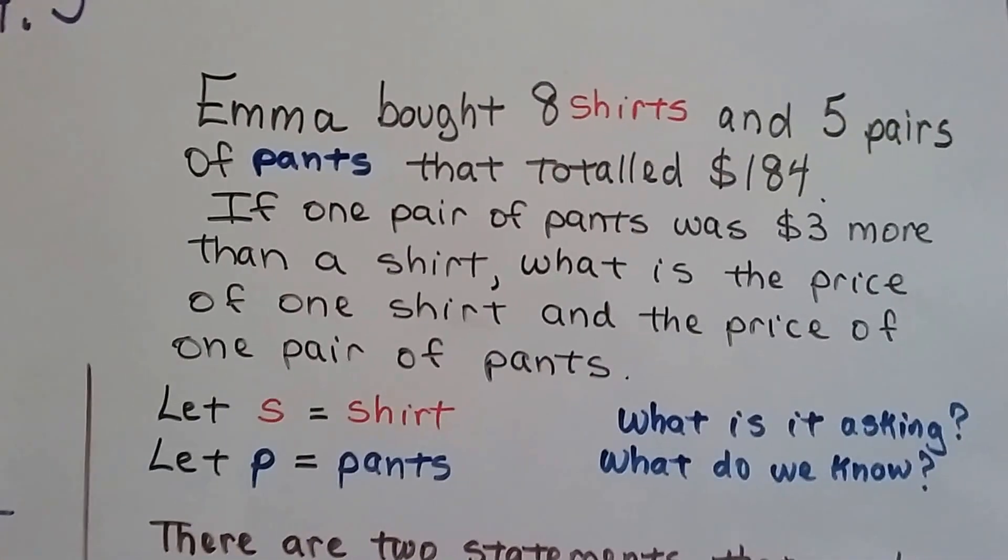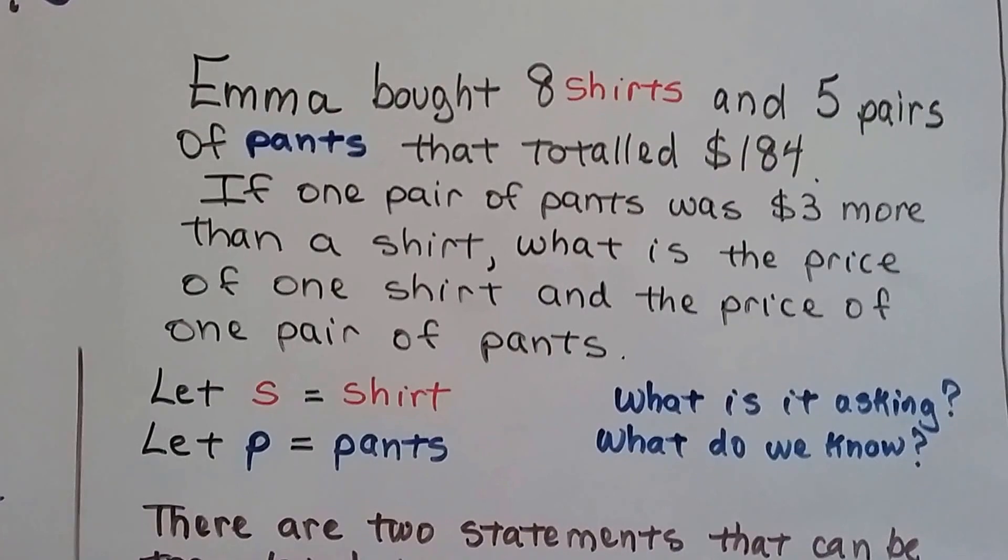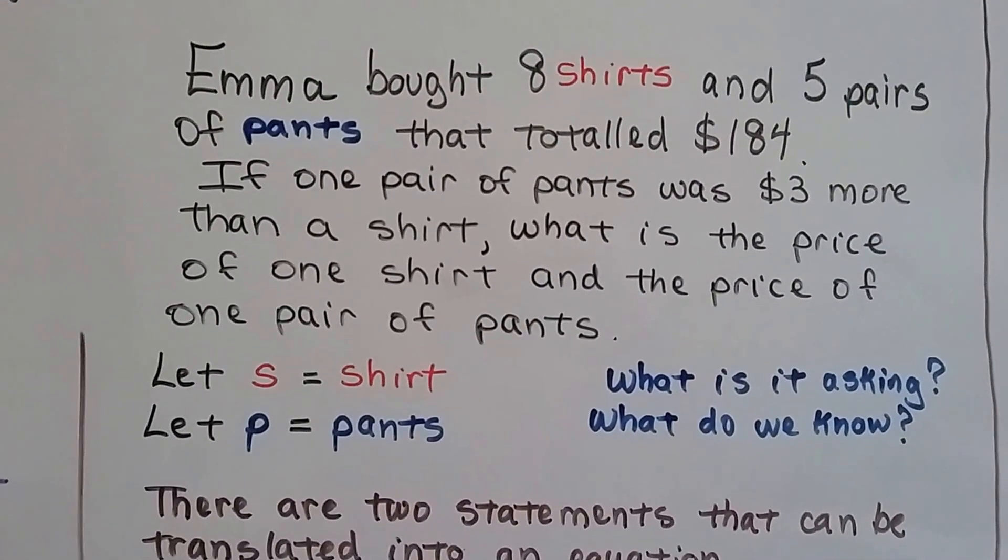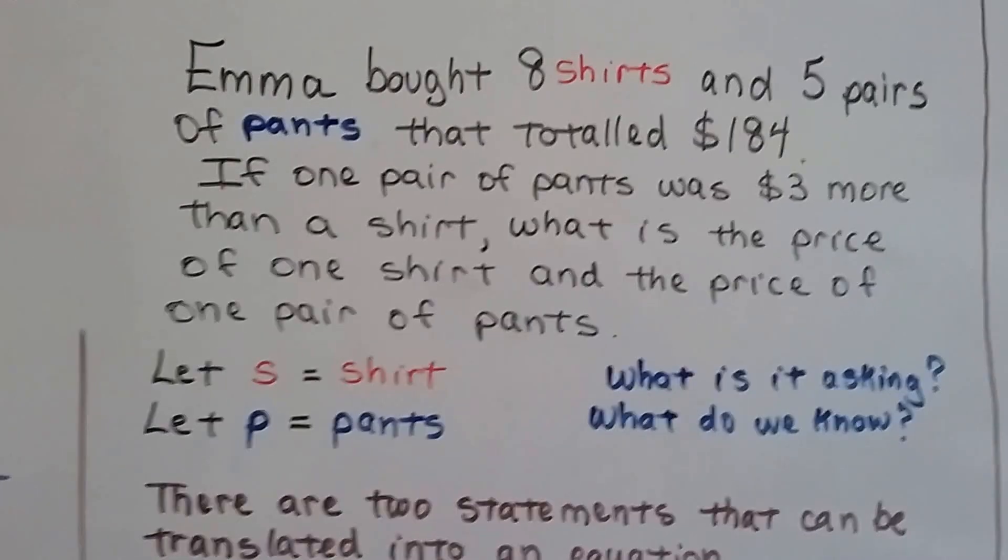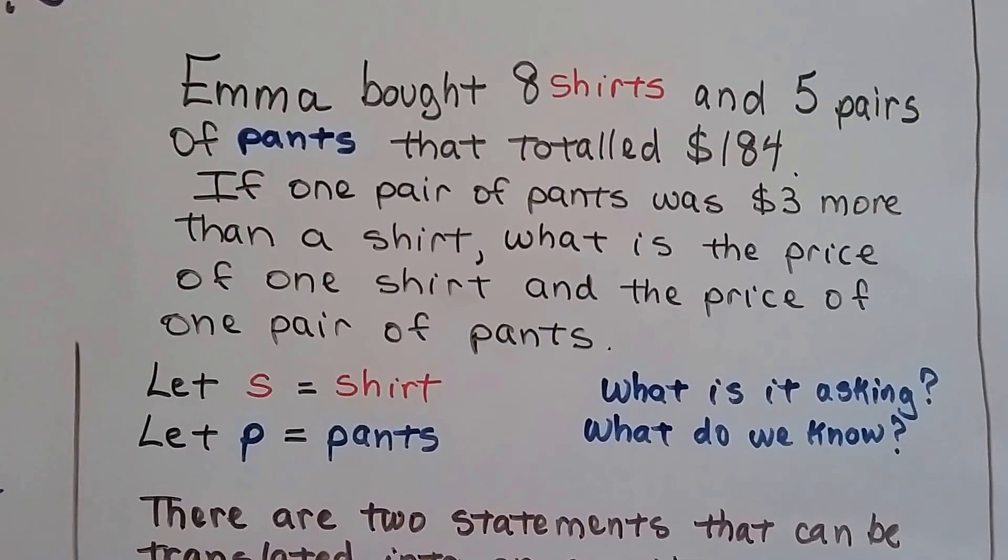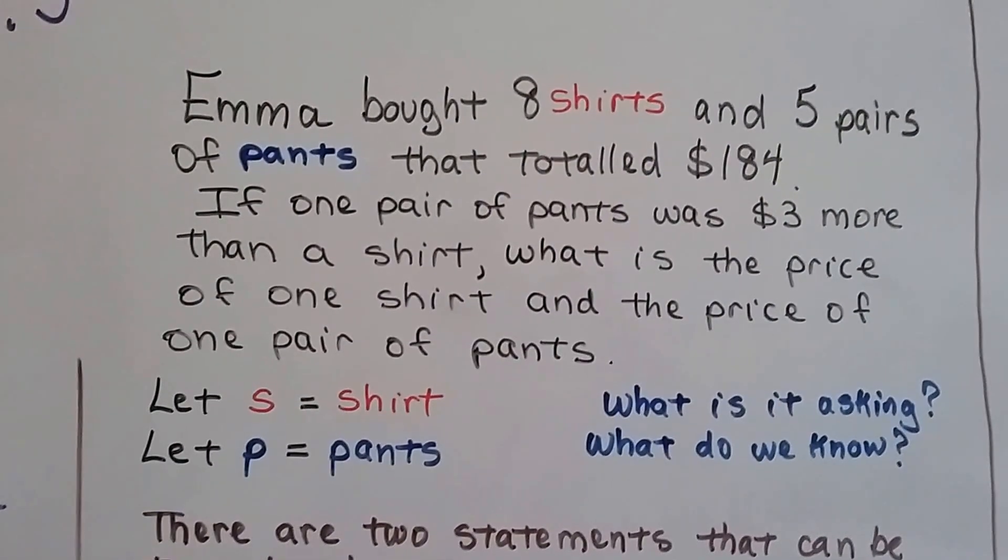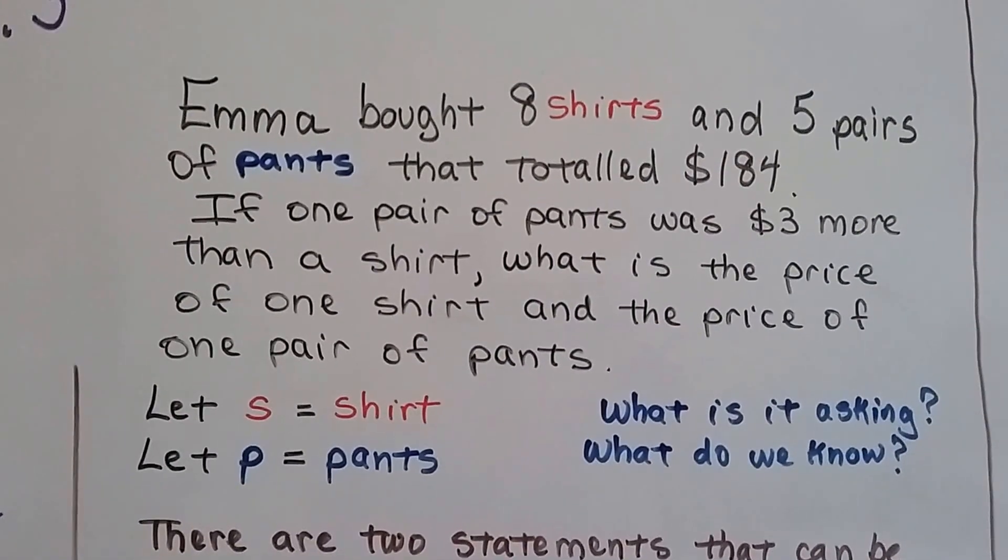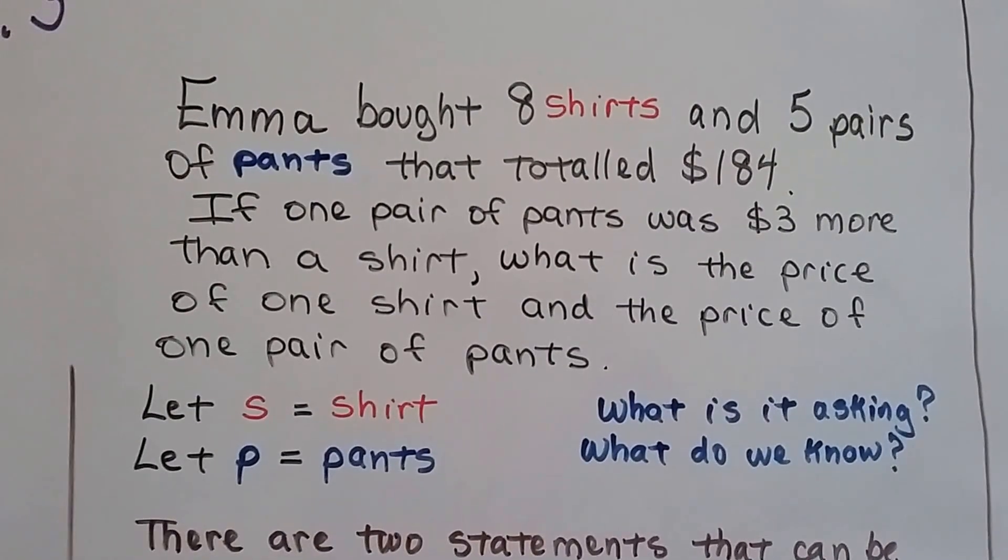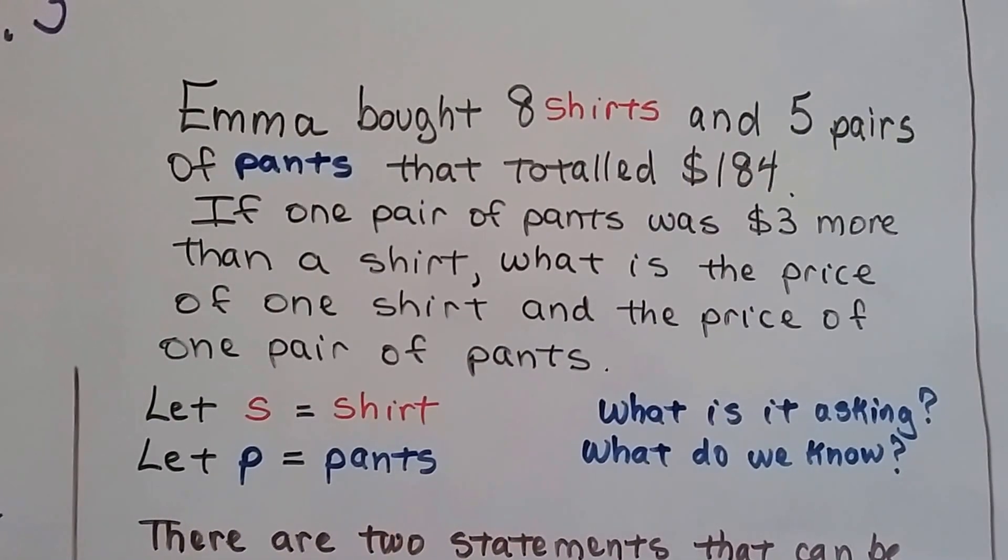Here we go. Emma bought eight shirts and five pairs of pants that totaled $184. If one pair of pants was $3 more than a shirt, what is the price of one shirt and the price of one pair of pants? So, we're going to let S equal shirt and P equal pants. That makes sense, doesn't it? What is it asking?